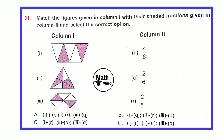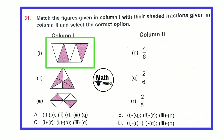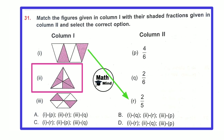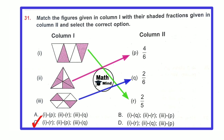Achiever Section. Question number 31: Match the figures in column 1 with their shaded fractions in column 2. Figure 1 is divided into 5 equal parts with 2 parts shaded — fraction is 2/5, matches with R. Figure 2 — triangle divided into 6 equal parts with 4 shaded — fraction is 4/6, matches with B. Figure 3 — hexagon divided into 6 equal parts with 2 colored — fraction is 2/6, matches with Q. Option C is correct.